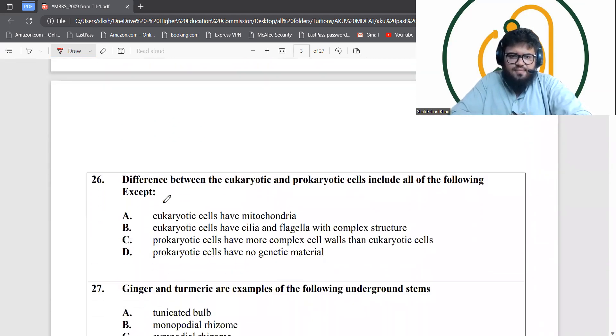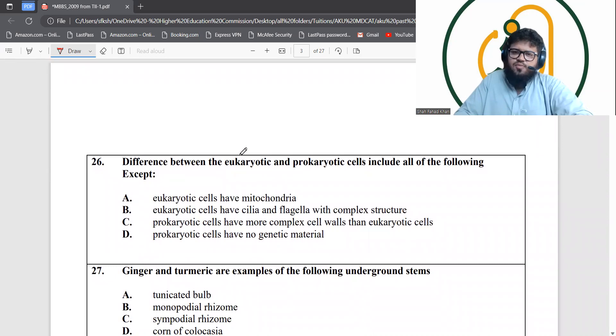Difference between eukaryotic and prokaryotic cells: eukaryotic cells are membrane-bound organelle-containing cells. Prokaryotic do not have any membranes, they lack a nucleus as well. Eukaryotic cells do have mitochondria. Eukaryotic cells have cilia and flagella with complex structure. Prokaryotic cells have more complex cell walls than eukaryotic cells.